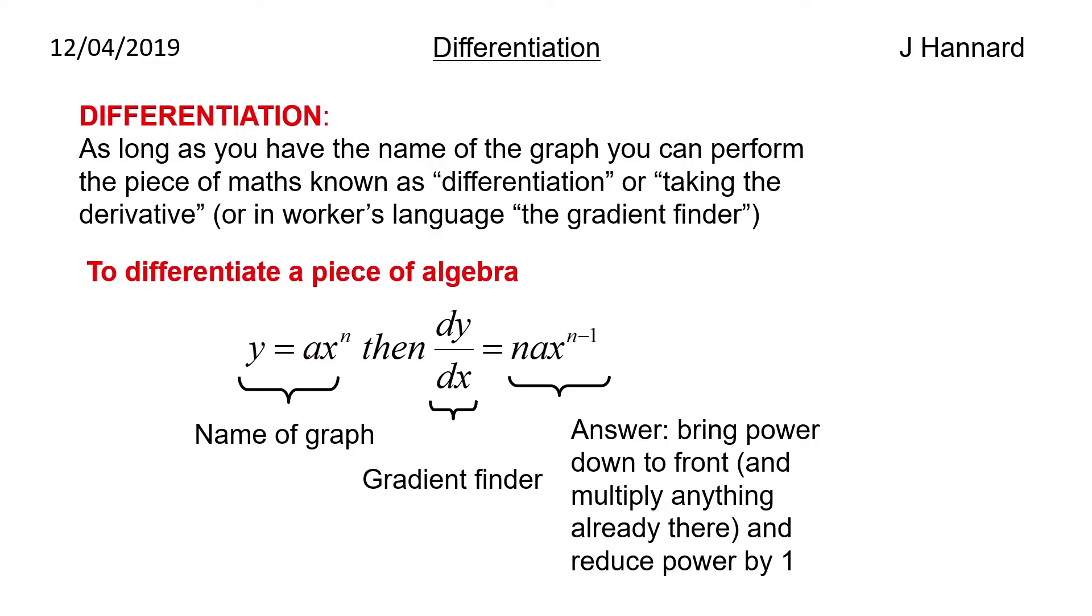So as you see the n has come down to the front and is now times the a and we've reduced the power by 1, so it's now n minus 1. Or you know in layman's terms it's basically bring the power to the front, knock 1 off the power.